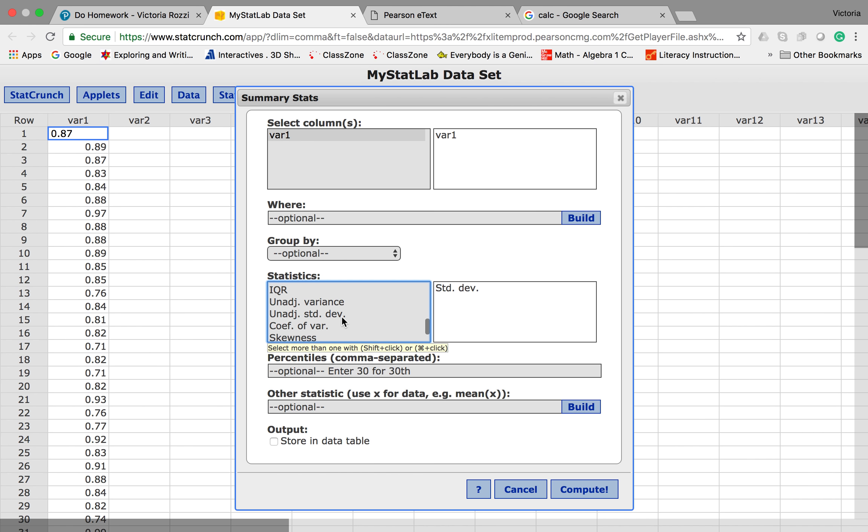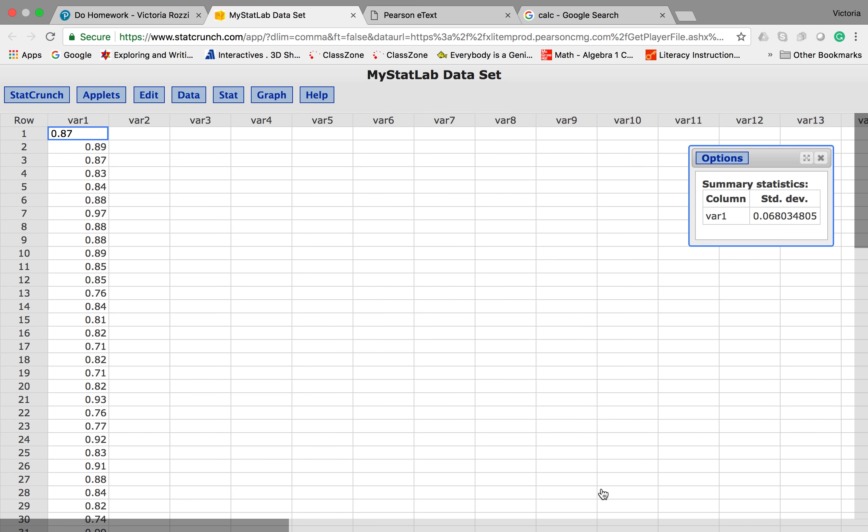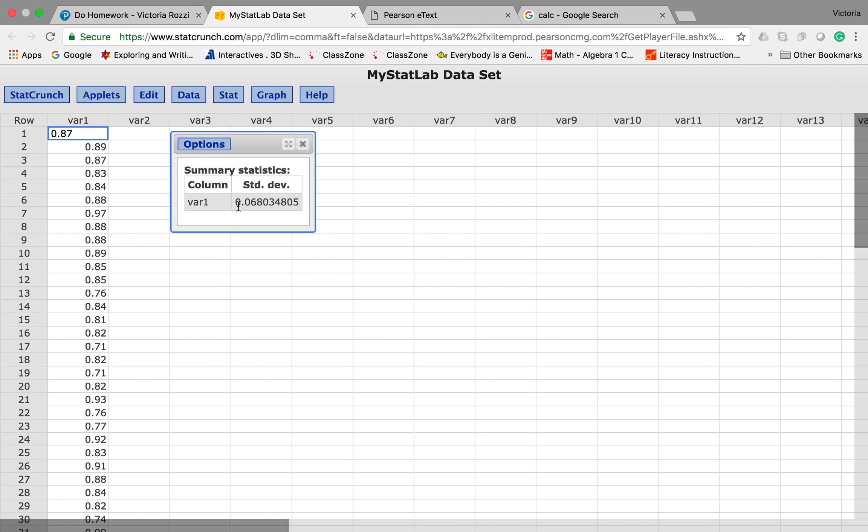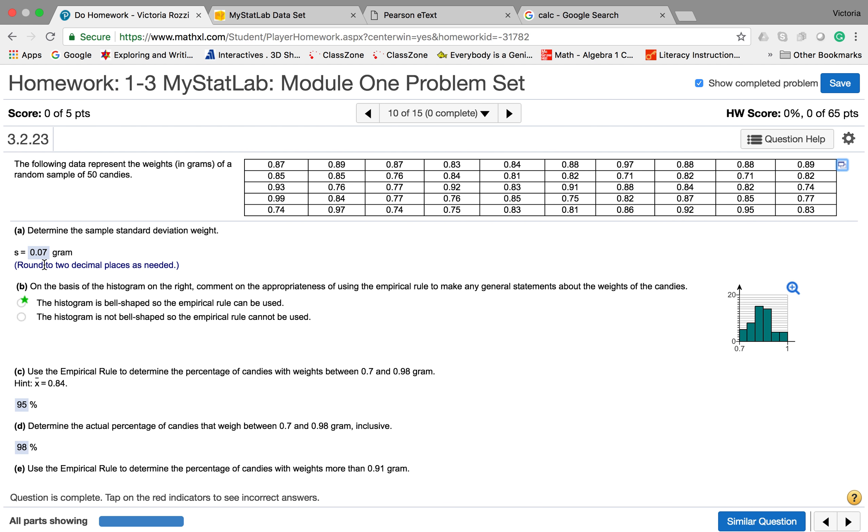Because we are dealing with a sample, we are just going to use the unmarked standard deviation and click compute. Here we're given our standard deviation. They only wanted up to two decimal places, so we're going to round up and make that 0.07. And as you can see here, that's the answer we got.